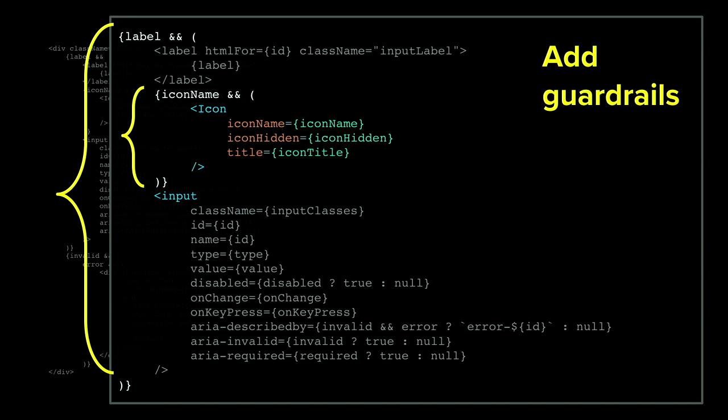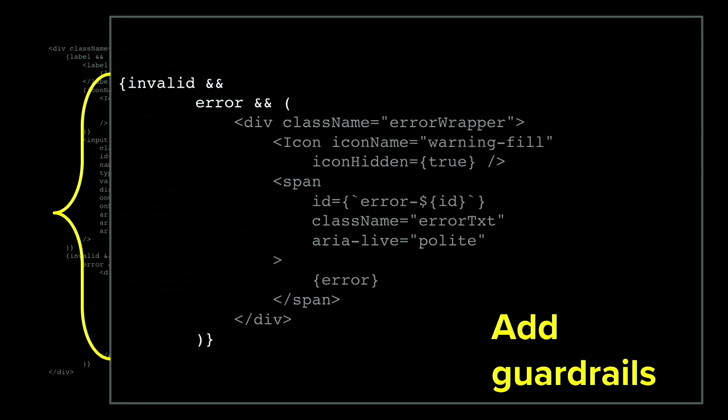Here's the big guardrail for the input component: if a developer does not pass in a label, the whole input doesn't render. This encourages developers to always pass in labels when using your input component. Also, if they don't pass in an icon name, the icon will not render. We do the same thing with error handling — if the developer doesn't pass in an invalid state and an error message, that whole error message section at the bottom will not render at all.